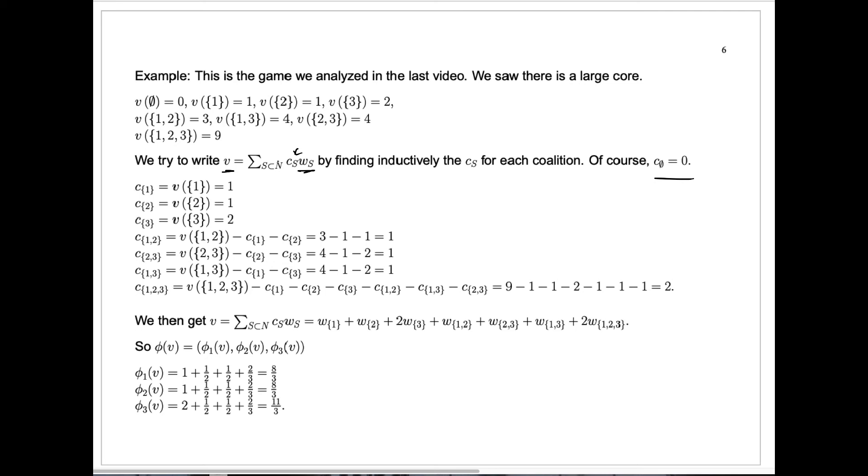How do we get the constant that we use for the coalition with just player one? Well, by the rule we had, you take the value for player one. For these singleton coalitions, it's easy to compute c sub s. For the constant c of the singleton set two is just the value for that single set, which is one. C for the singleton set three is just the value for that singleton set, which is two.